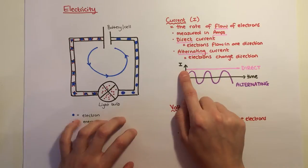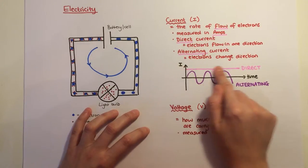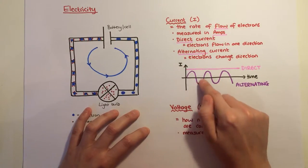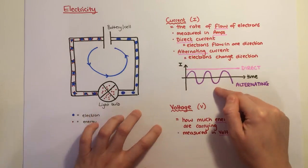On a diagram, on a graph, direct current would be a straight line with current being constant, whereas alternating current, the current is positive, negative, positive, negative.